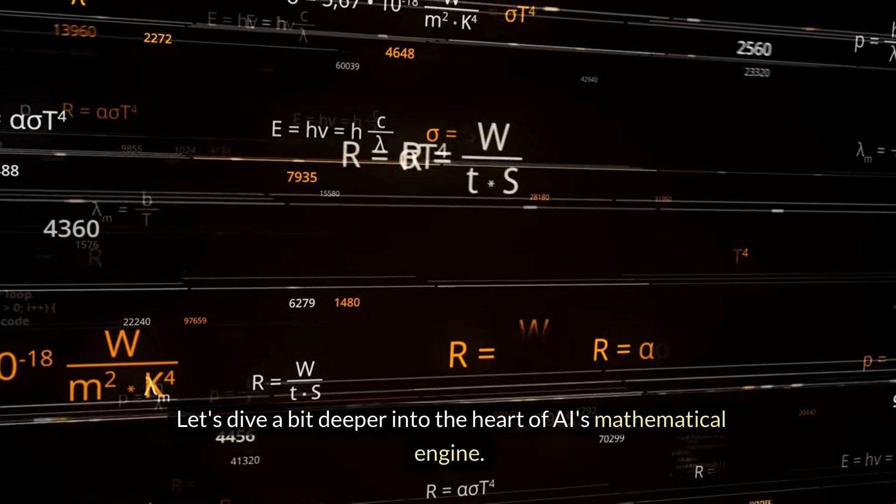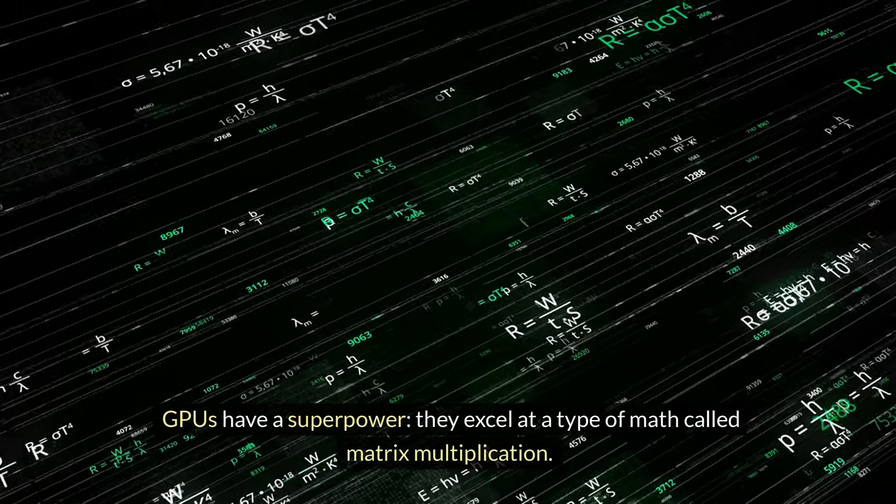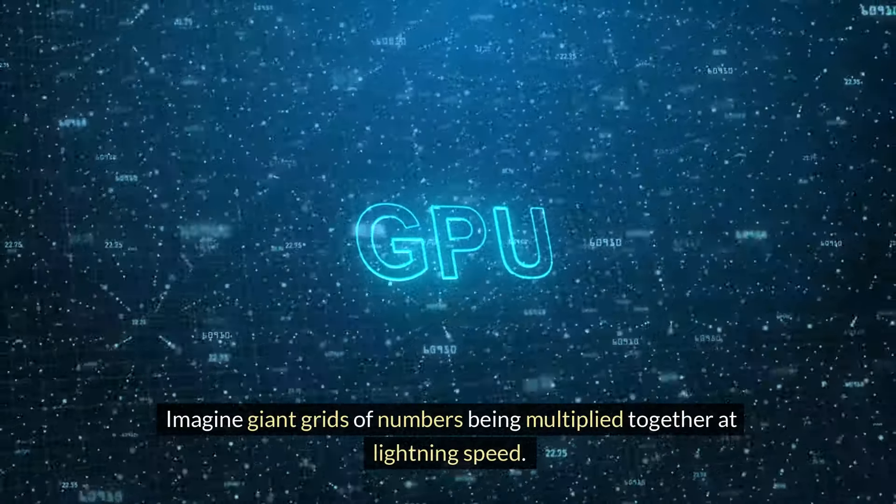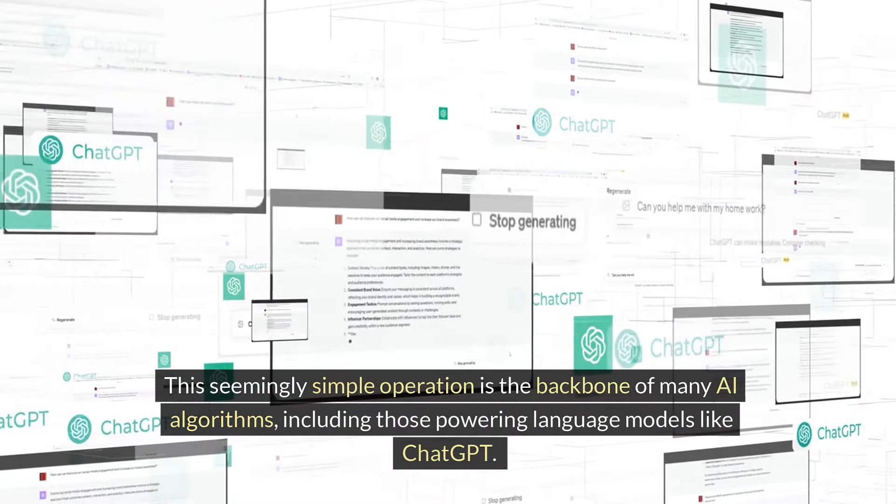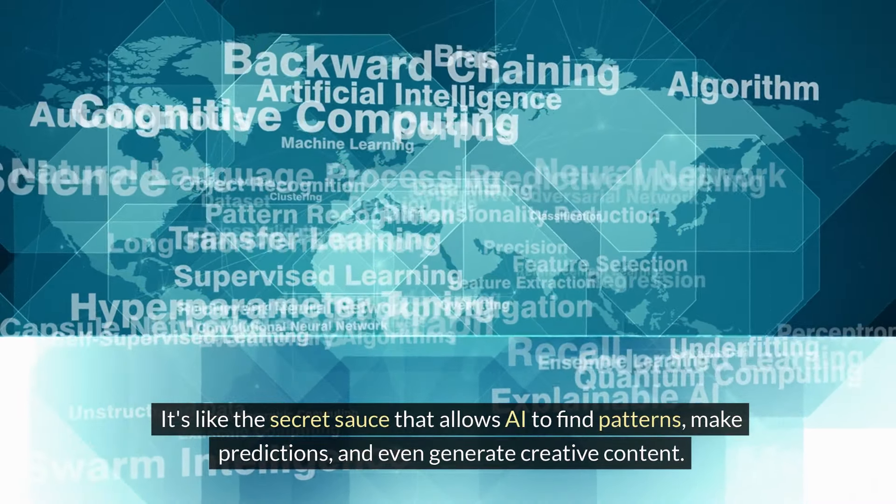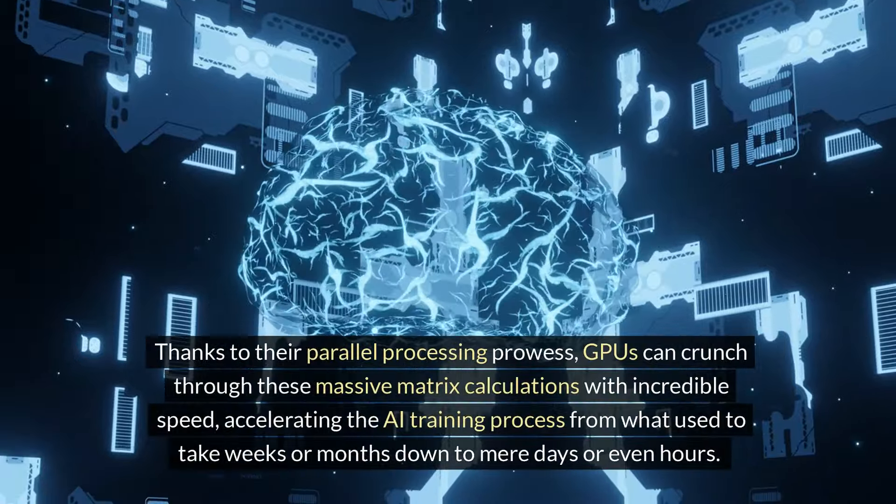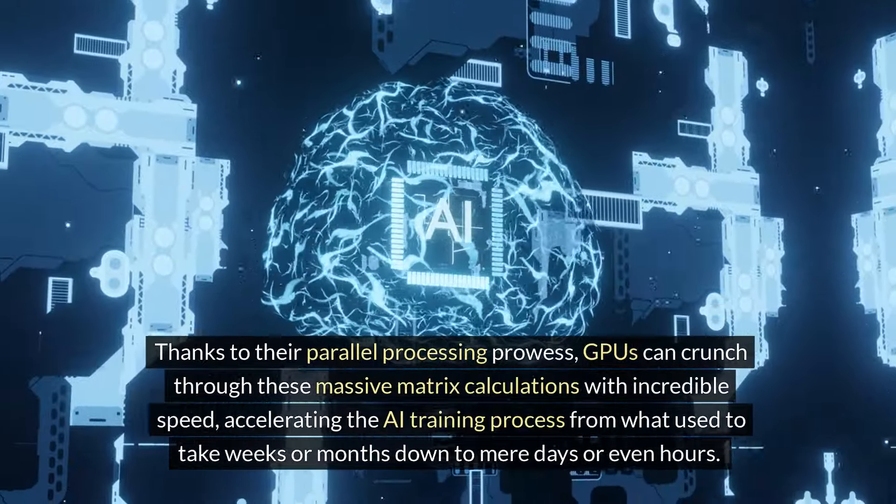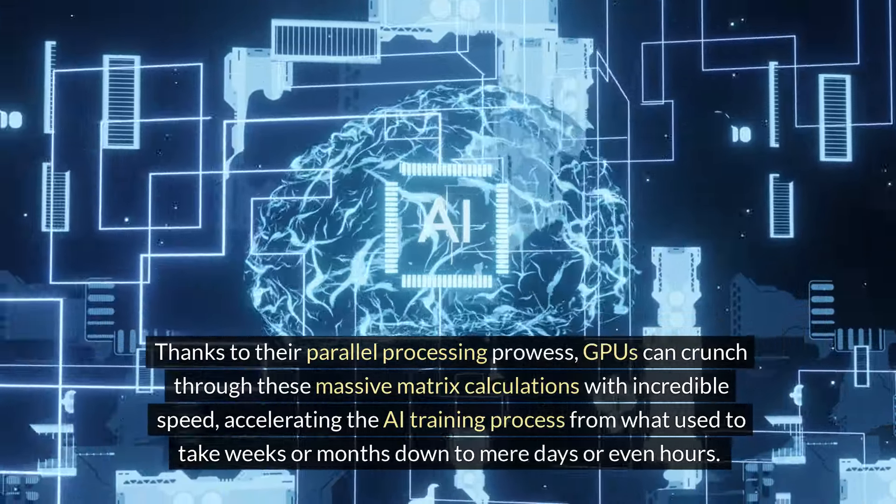Let's dive a bit deeper into the heart of AI's mathematical engine. GPUs have a superpower: they excel at a type of math called matrix multiplication. Imagine giant grids of numbers being multiplied together at lightning speed. This seemingly simple operation is the backbone of many AI algorithms, including those powering language models like ChatGPT. It's like the secret sauce that allows AI to find patterns, make predictions, and even generate creative content. Thanks to their parallel processing prowess, GPUs can crunch through these massive matrix calculations with incredible speed, accelerating the AI training process from what used to take weeks or months down to mere days or even hours.